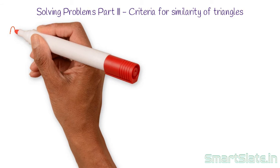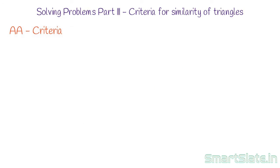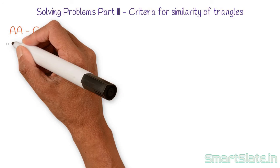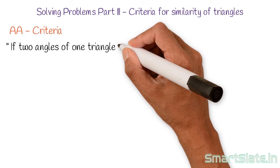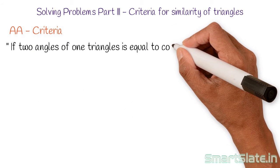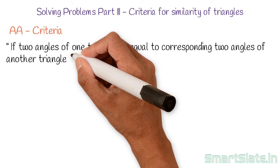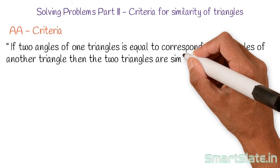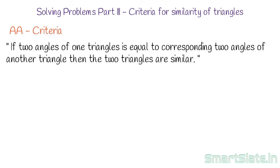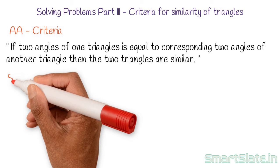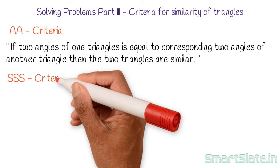The first criteria is Angle-Angle, or AA similarity criteria. It states: if two angles of one triangle are equal to the corresponding two angles of another triangle, then the two triangles are similar.